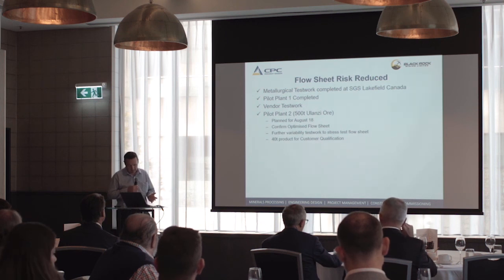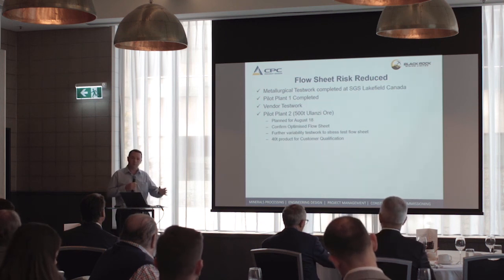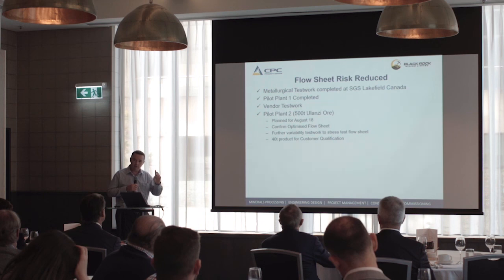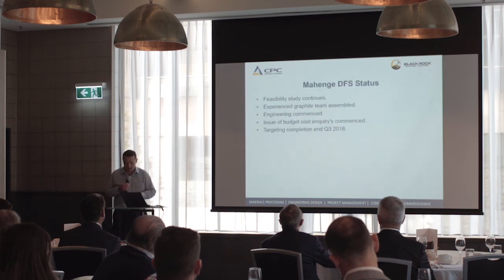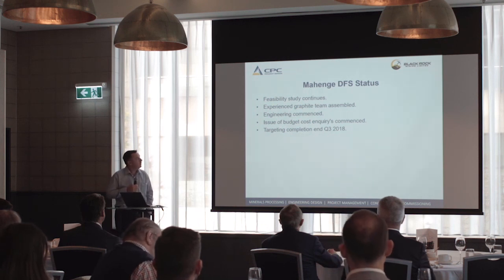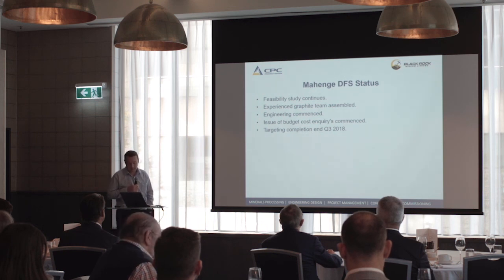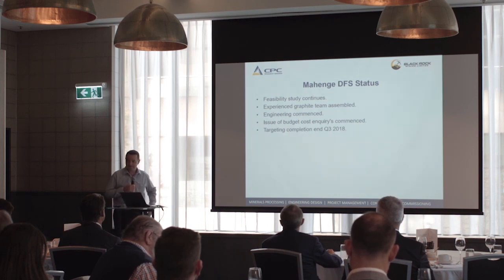Pilot plant 2 is planned for August 2018. During that campaign, as well as producing more product for marketing, we'll confirm the optimised flow sheet and conduct further variability test work to stress test the flow sheet. To wrap things up, we're currently full steam ahead on the feasibility study. We've assembled an experienced graphite team, many of whom have come across from the Balama project, and we've commenced engineering and started issuing budget cost inquiries to the market with good feedback. We're targeting to finish the DFS at the end of Q3 2018.